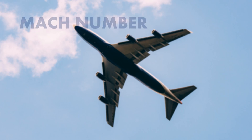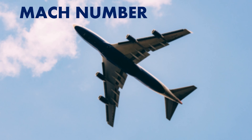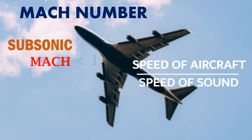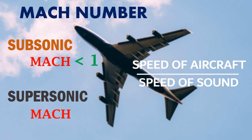So, what is meant by Mach number? A Mach number is defined as the ratio of the speed of the aircraft to the speed of sound. For subsonic aircraft, the Mach number is less than 1 since they fly slower than the speed of sound. For supersonic aircraft, the Mach number is greater than 1. Usually, commercial subsonic aircraft operate at 0.6 to 0.8 Mach, and supersonic aircraft planned for commercial operation will operate between 1.2 to 2 Mach.